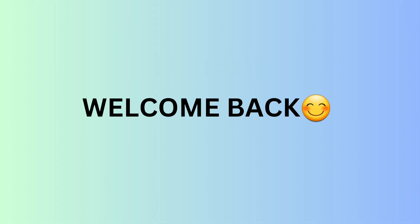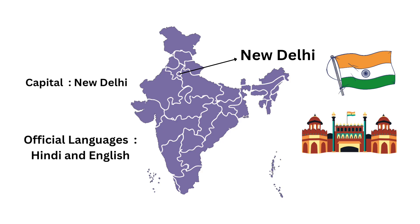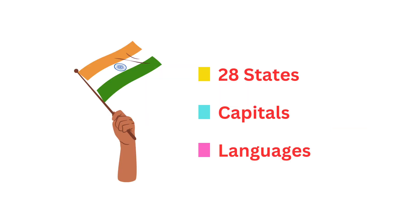Hello, welcome back to my channel. India is a democratic country. New Delhi is the capital of India and the official languages are Hindi and English. Today we are going to discuss all the 28 states with their capitals and official languages.